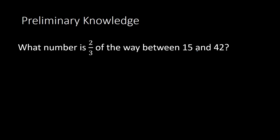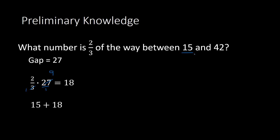One other question: what number is two thirds of the way between 15 and 42? I find the gap first by subtracting 42 minus 15 to get 27. Then two thirds of 27 — I take two thirds times 27. I have 27 over 1, so I can cancel the 3 with the 27 to get 9, and 2 times 9 gives me 18. So 18 is what I add to 15 to get my solution of 33.